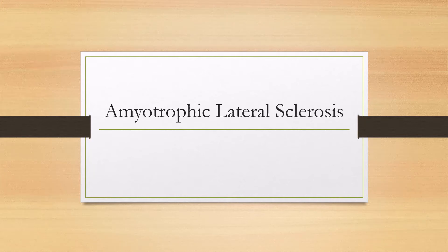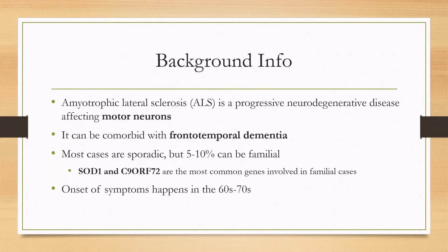Let's talk about amyotrophic lateral sclerosis. ALS is a progressive neurodegenerative disease affecting mainly the motor neurons. It can be comorbid with frontotemporal dementia, which is the most common dementia seen in ALS. Most cases are sporadic, but about 5 to 10 percent can be familial, and in these cases genetic testing is offered. The most common genes found in familial cases are SOD1 (superoxide dismutase) or the C9orf72 genes. The onset of symptoms typically happens in a patient in their 60s or 70s.